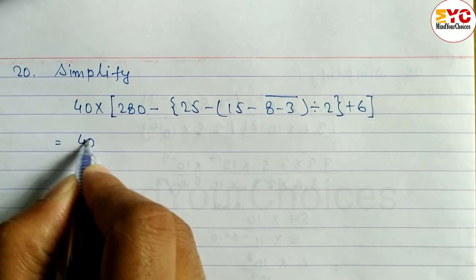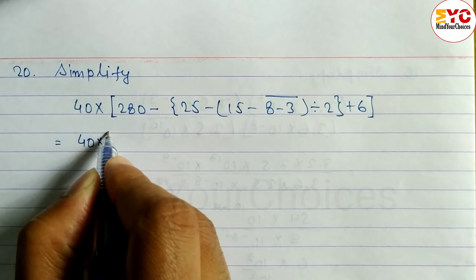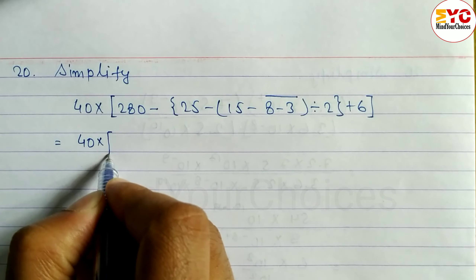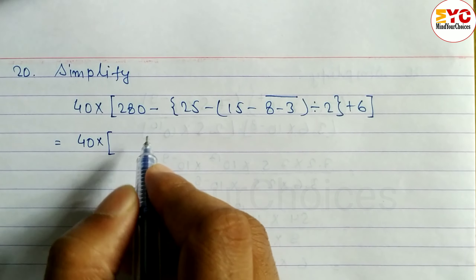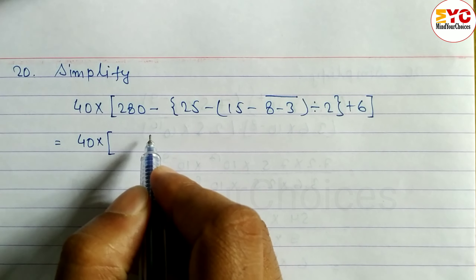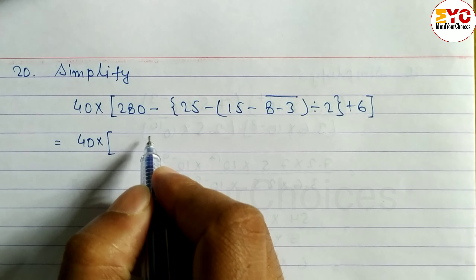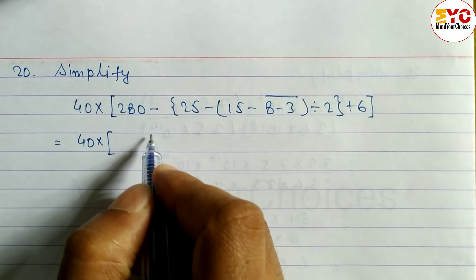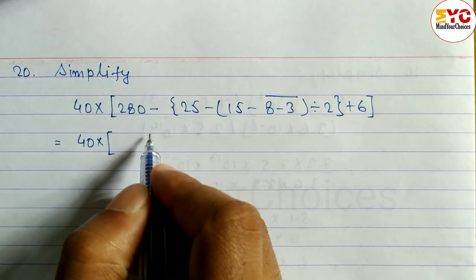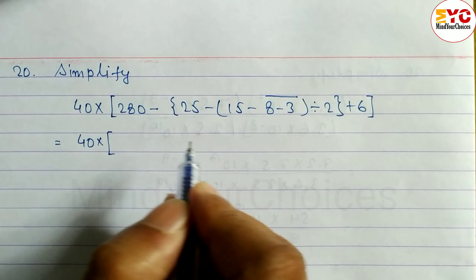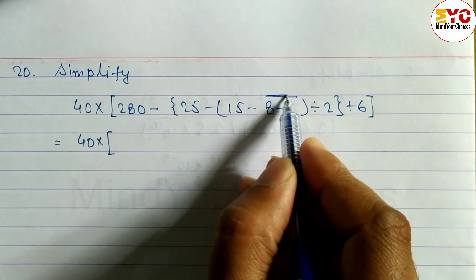We solve this using the BODMAS rule. The order is: first brackets, then divide, then multiply, then add, and then subtract. The BODMAS rule has 12 steps to follow.